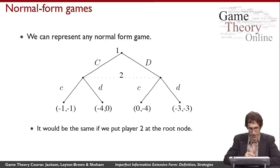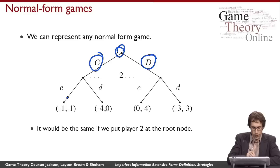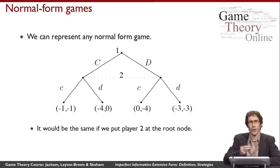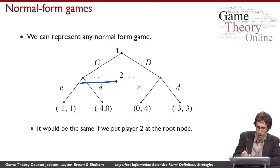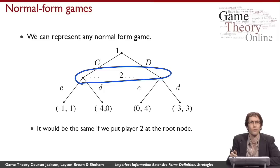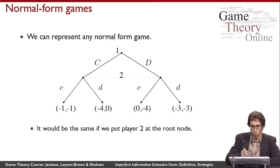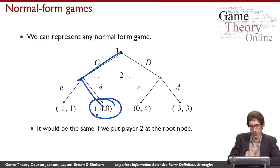Player one decides whether to cooperate or defect, and then player two decides whether to cooperate or defect. In the Prisoner's Dilemma, you don't see what the other person chose when you take your own action. Although player two moves second in this representation, it doesn't matter because player two isn't informed of what player one did — they're in the same equivalence class. Once both take their actions, the payoffs match those in the standard game matrix.